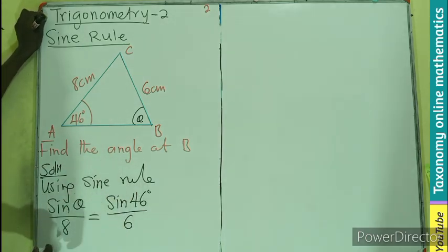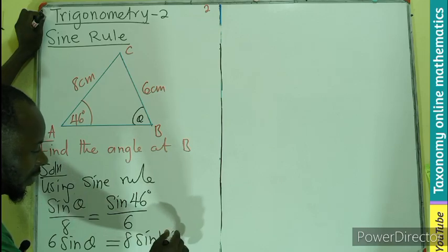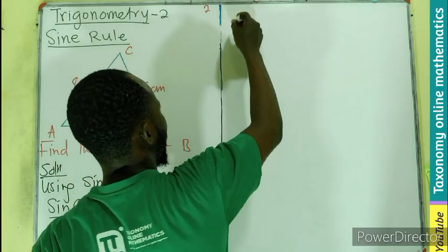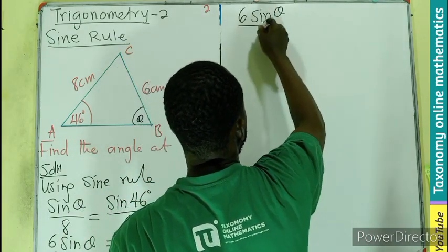We will do cross multiplication. So in this case we have 6 sine theta equals 8 sine 46 degrees. But what are we looking for? Theta. So we have 6 sine theta divided by 6...